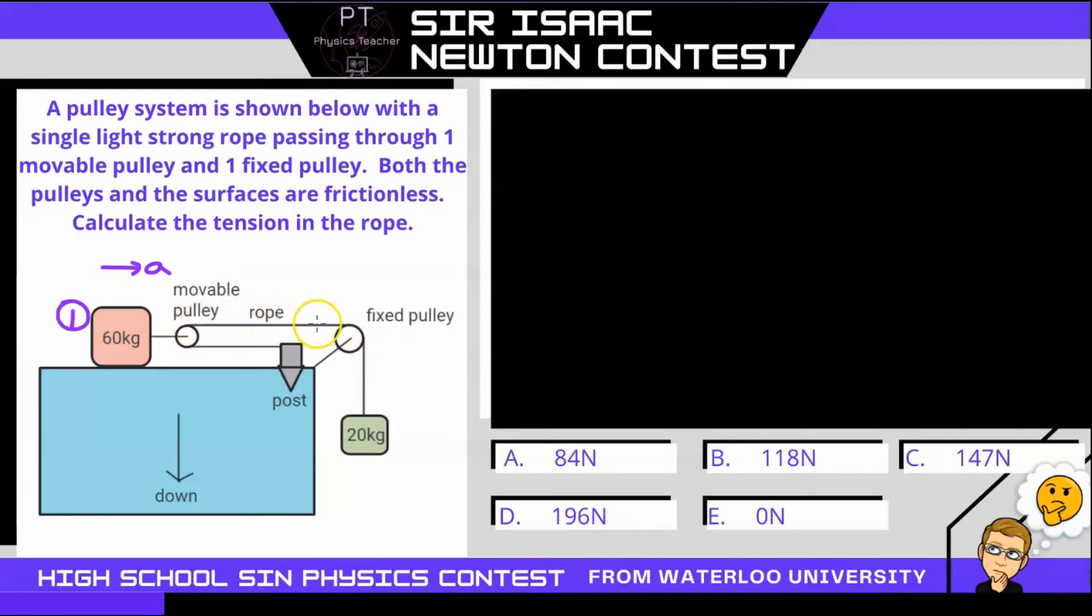And then this rope comes over here, over a fixed pulley, and we have this hanging mass. Let's call this mass 2. Now its acceleration is not going to be A. So what's its acceleration going to be? Let's look at the rope. When this mass moves down, let's say, 1 meter,